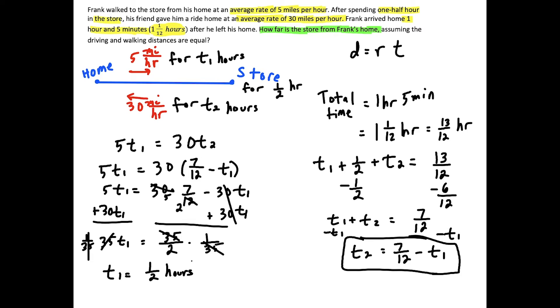The distance, how far the store is from Frank's home, we could say is equal to, well, he walks at a rate of 5 miles per hour. And he's walking for a total of one half of an hour. So then the units cancel. Hours over hours cancels out. And then 5 times a half is two and a half. So the store is two and a half miles from Frank's home.